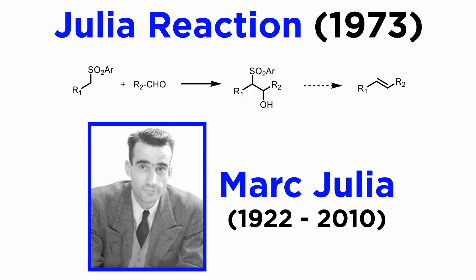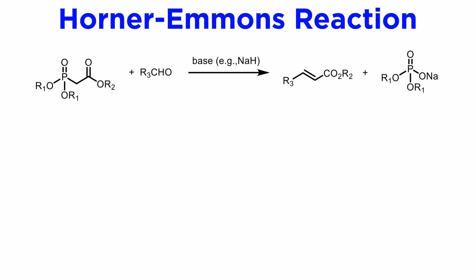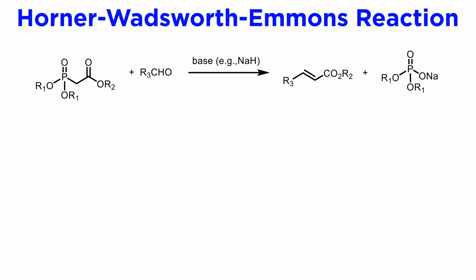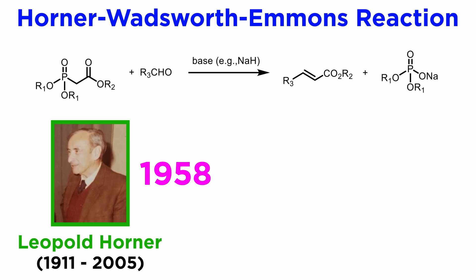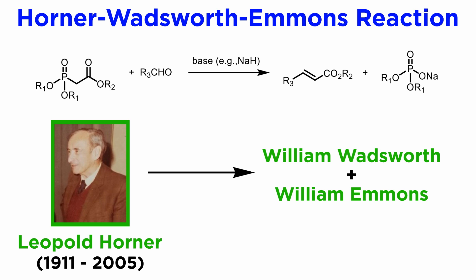We have been discussing a number of olefination reactions, including the previous tutorial on the two-step Julia olefination. Now let's turn to what is perhaps the most widely used olefination reaction, the Horner-Emmons reaction, sometimes also referred to as the Horner-Wadsworth-Emmons reaction. This was invented by German chemist Leopold Horner in 1958 and perfected years later by American chemists William Wadsworth and William Emmons.